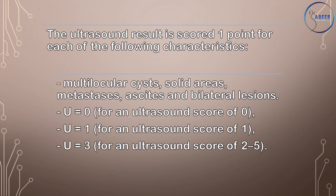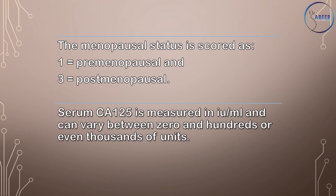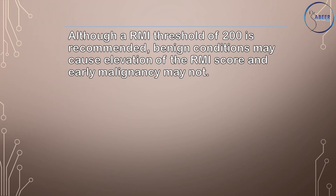U equals zero for an ultrasound score of zero; U equals one for an ultrasound score of one; U equals three for an ultrasound score of two to five. The menopausal status is scored as one for pre-menopausal and three for post-menopausal. Serum CA-125 is measured in international units per ml and can vary between zero and hundreds or even thousands of units. Although a RMI threshold of 200 is recommended, benign conditions may cause elevation of the RMI score and early malignancy may not.